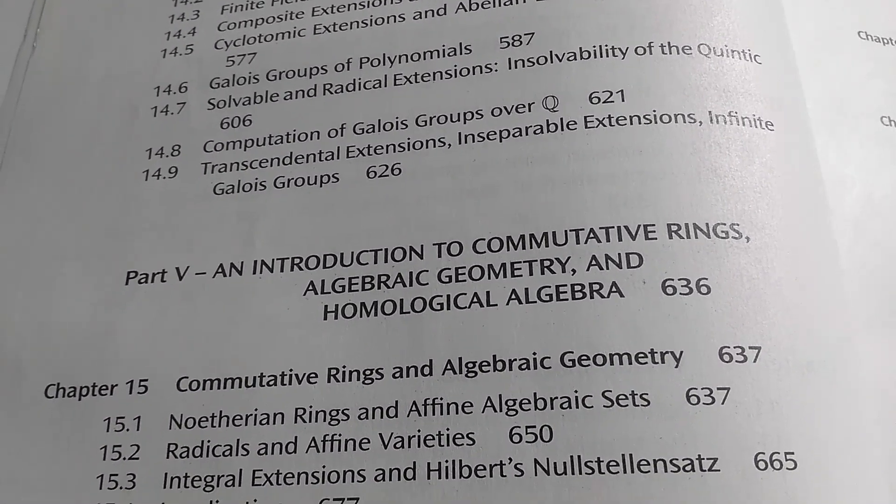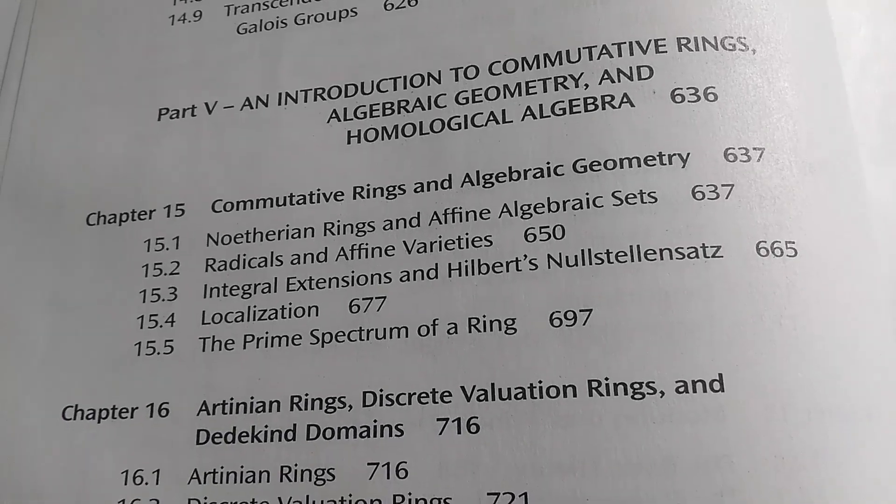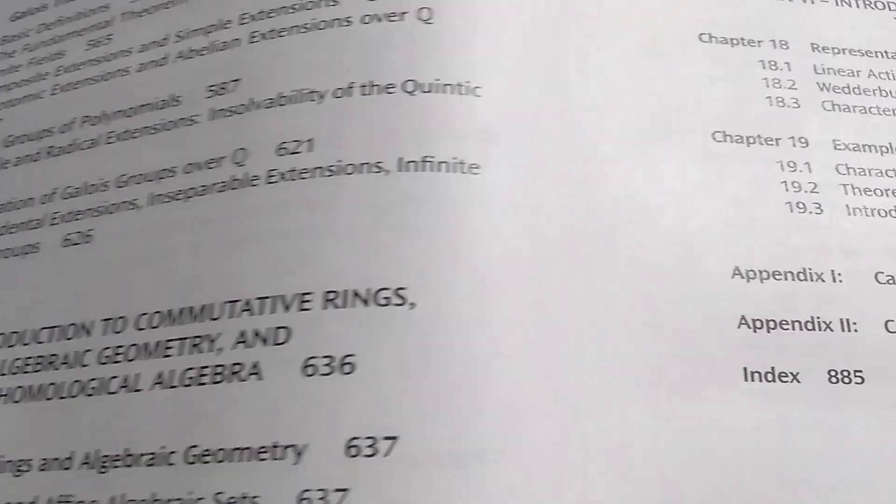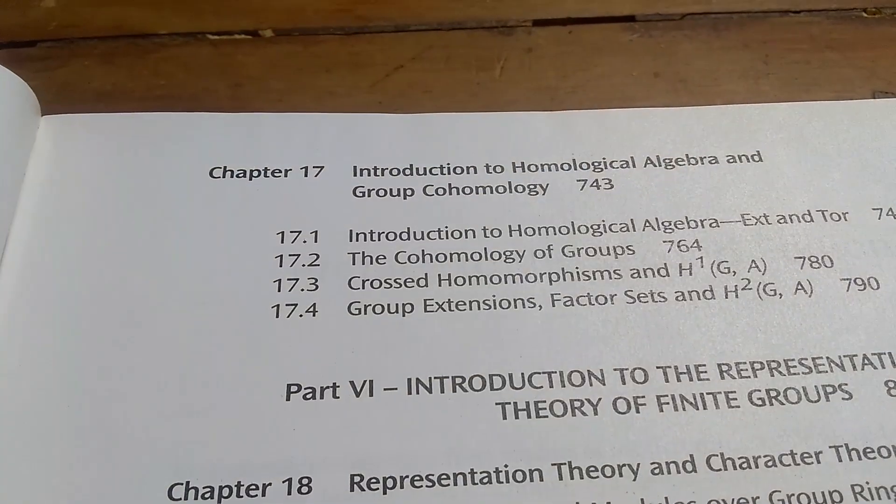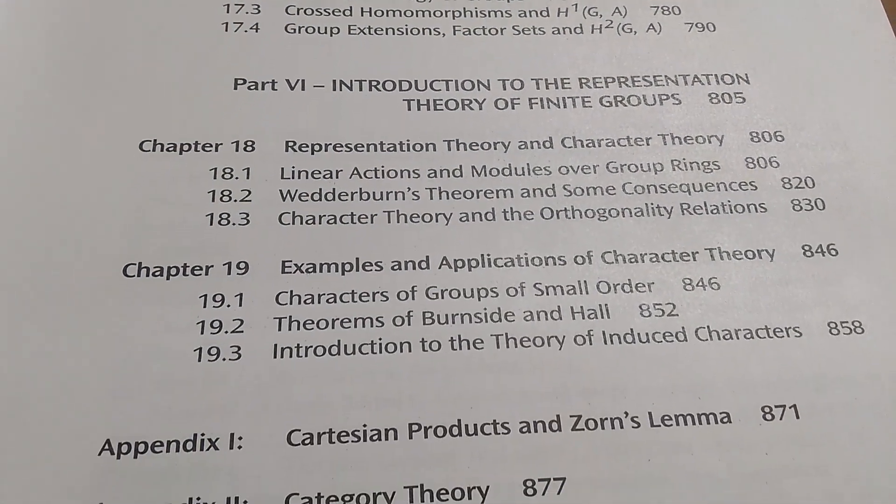And then he talks about some other stuff. Noetherian rings. Artinian rings. Really great stuff. Homological algebra. And then representation theory and character theory.